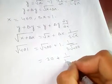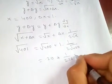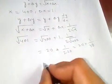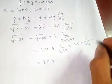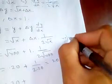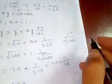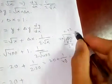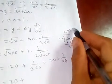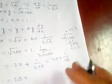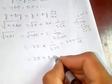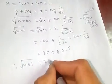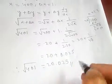Substituting x = 400 and Δx = 1: √401 ≈ 20 + 1/(2×20) = 20 + 1/40 = 20 + 0.025. Therefore, the square root of 401 is approximately 20.025.